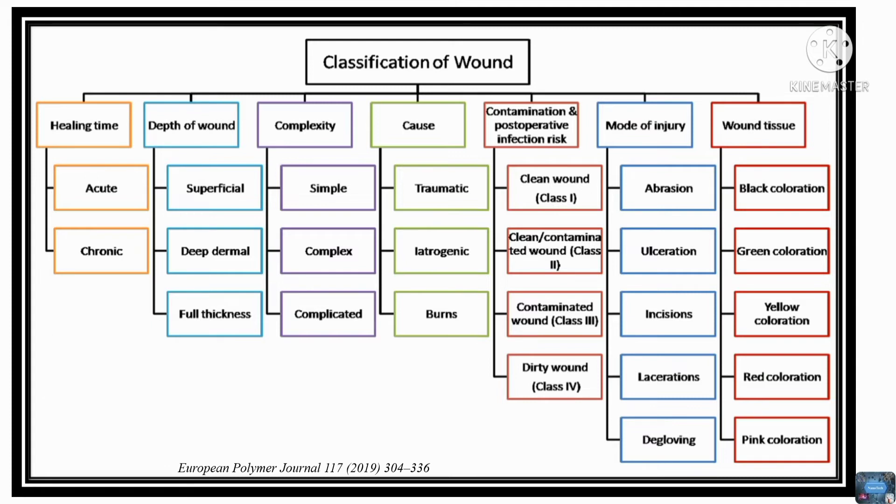Wound healing stages. Wound repair is a dynamic process that primarily consists of four biological stages: hemostasis, inflammation, proliferation, and remodeling, which occur sequentially but overlap.